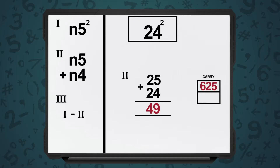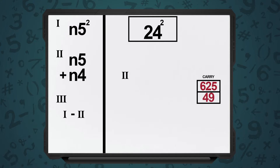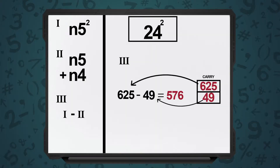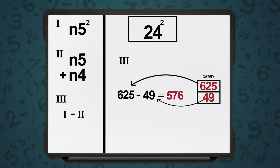Step 2: because our number is n4, we are going to do n5 plus n4. So in this case, it becomes 25 plus 24, which gives us 49. And in Step 3, we take the result of Step 1 minus the result of Step 2. In the n6 square method, Step 3 was result of Step 1 plus result of Step 2. In the n4 square sequence, Step 3 is result of Step 1 minus result of Step 2. So, Step 1 was 625 and Step 2 is 49, so 24 squared equals 625 minus 49, that's 576.